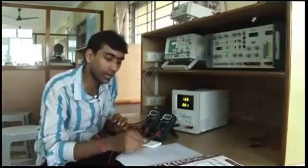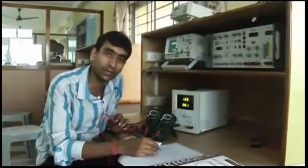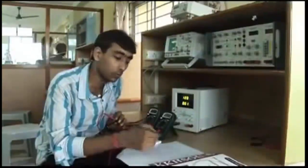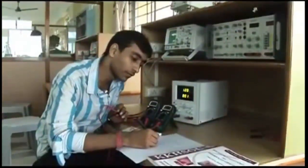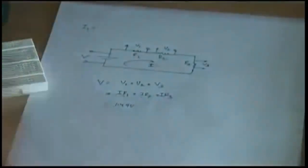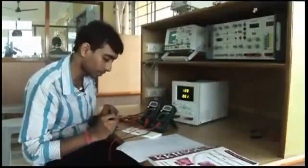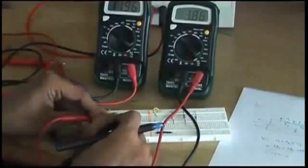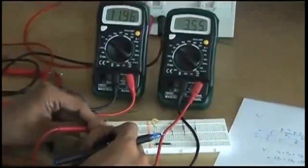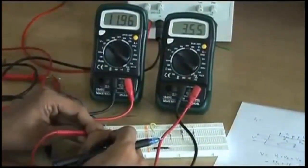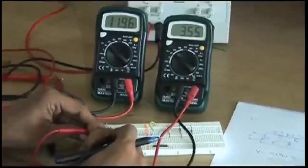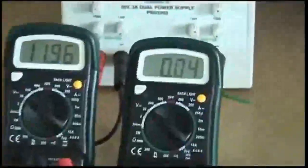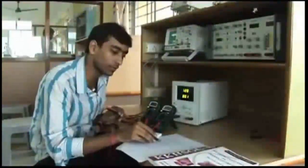The voltage across R1 was 1.49 volts, as we measured. Now I am connecting the multimeter across the second resistor and I am getting around 3.55 volts. The multimeter is showing 3.55 volts, so V2 equals 3.55 volts.